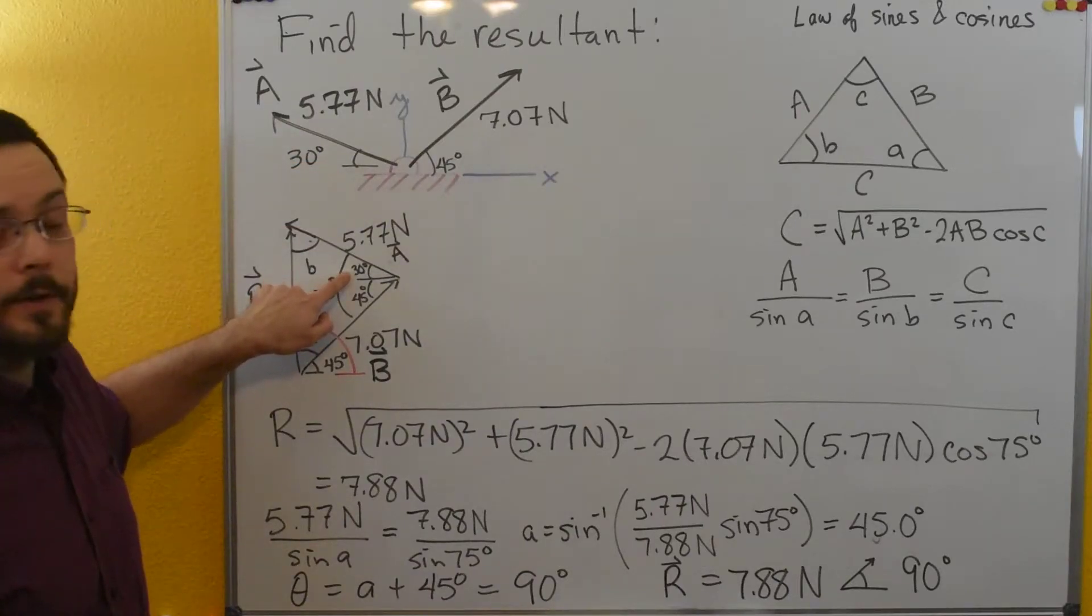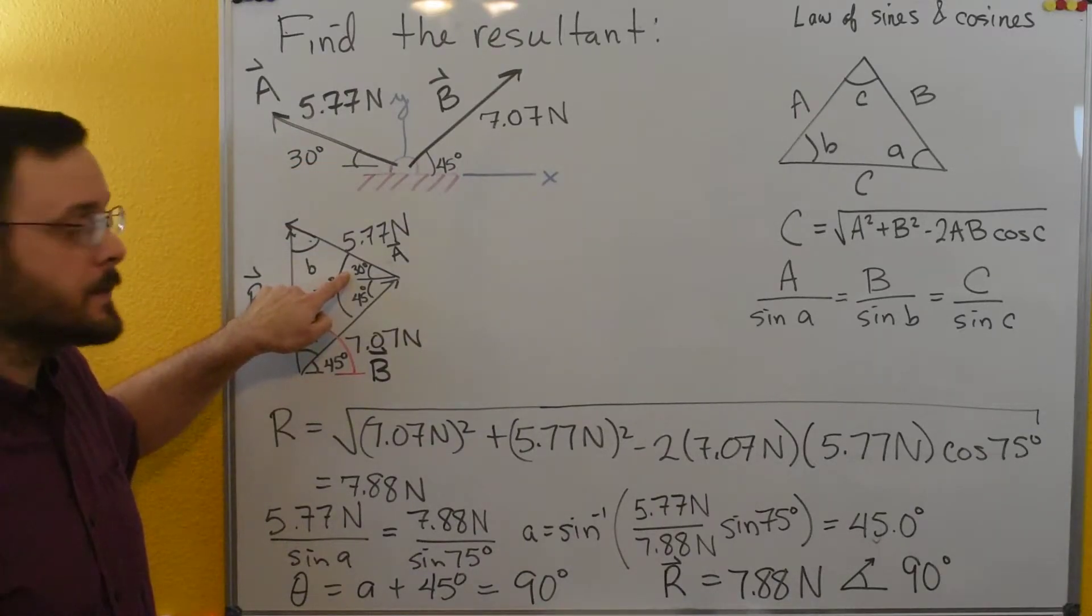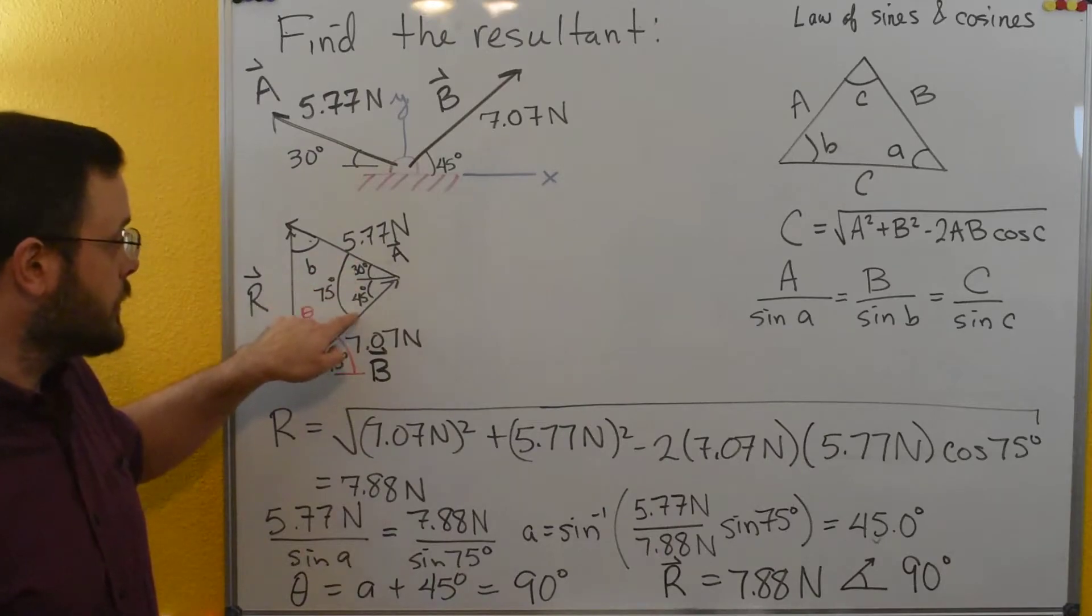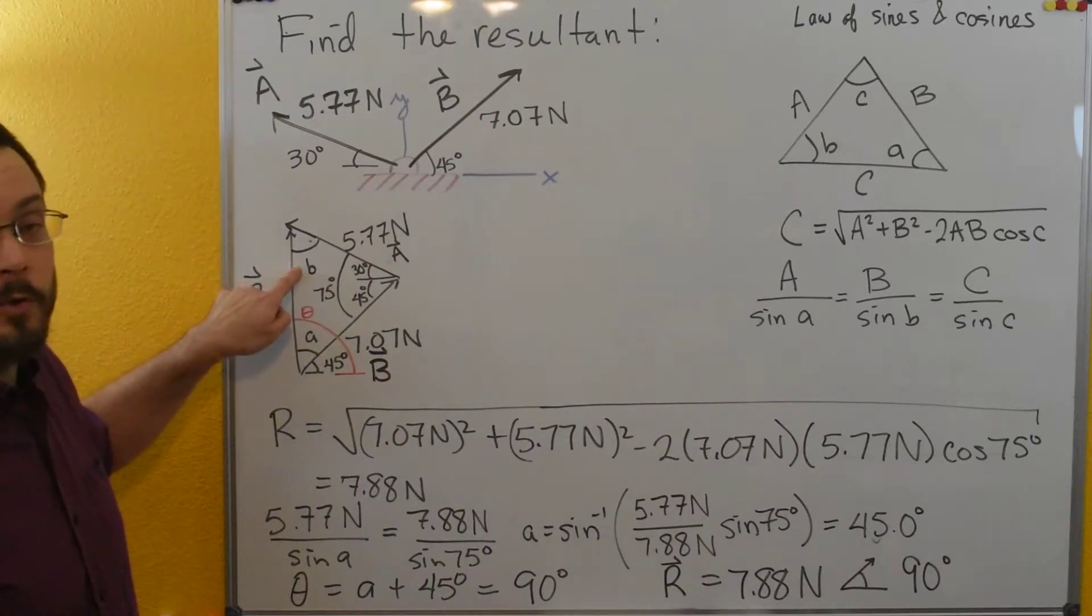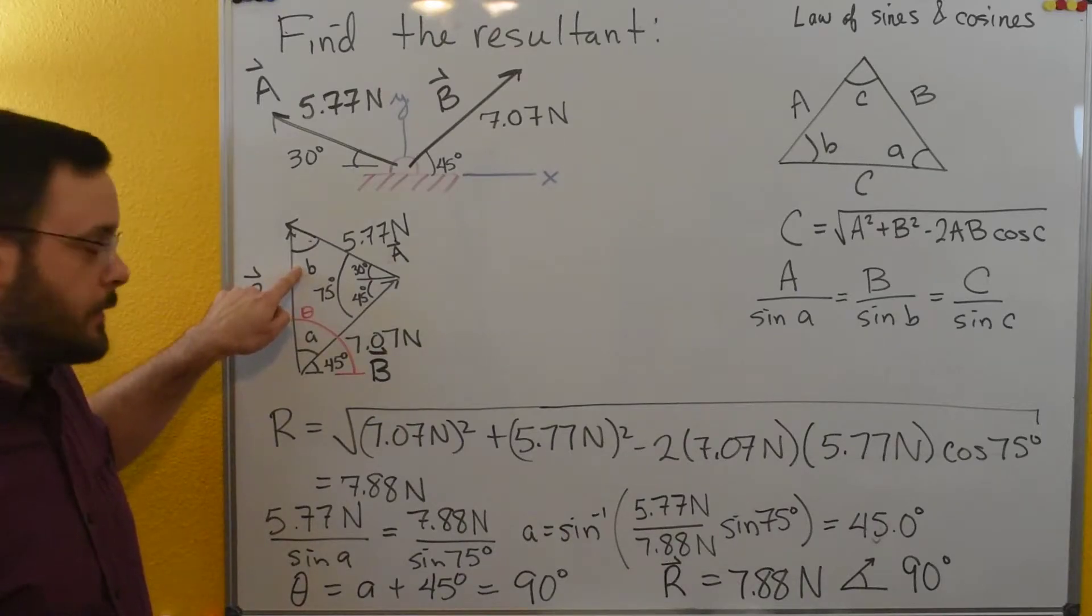I know that if this line's parallel to my x-axis and my vector here makes an angle of 30 degrees to the x-axis, that angle there also has to be 30 degrees. Then I can just add these two angles up and get 75 degrees. I don't know this angle so I'm just going to label it as b. It turns out I don't even need it for this problem.